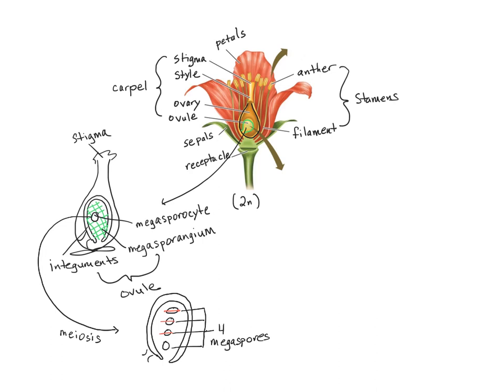The last surviving megaspore is going to undergo mitosis to produce our fully developed female or megagametophyte. The megagametophyte of angiosperms is highly reduced, so it only includes seven cells and eight nuclei.